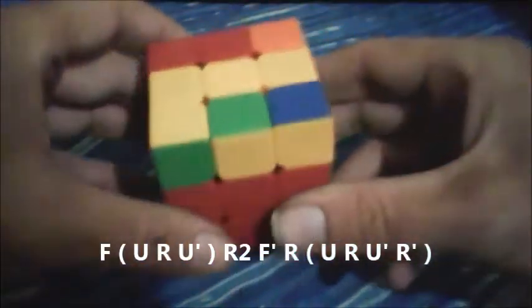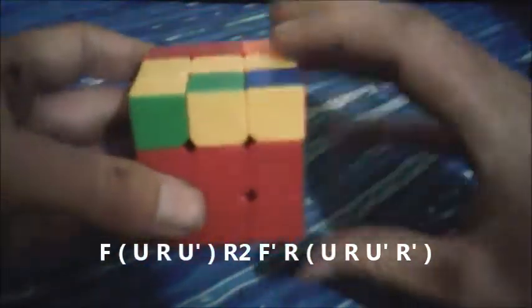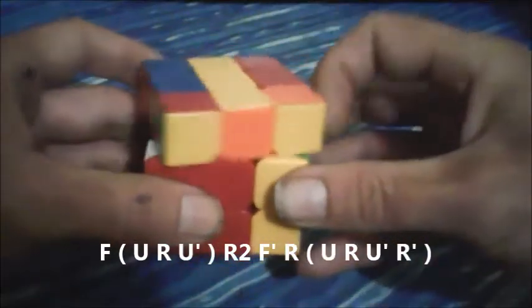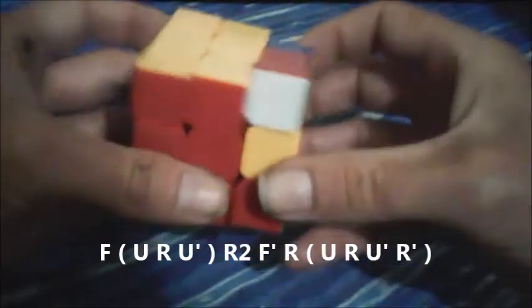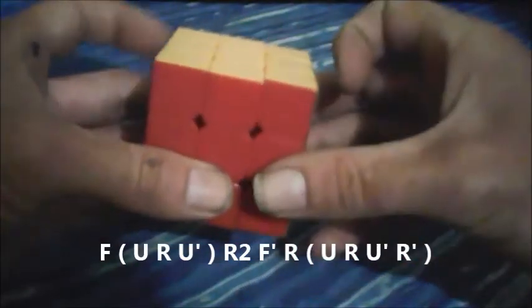And then we'll go through it slightly two times so you can follow along. Front, U, R, U prime, R2, F prime, R, U, R, U prime, R prime.